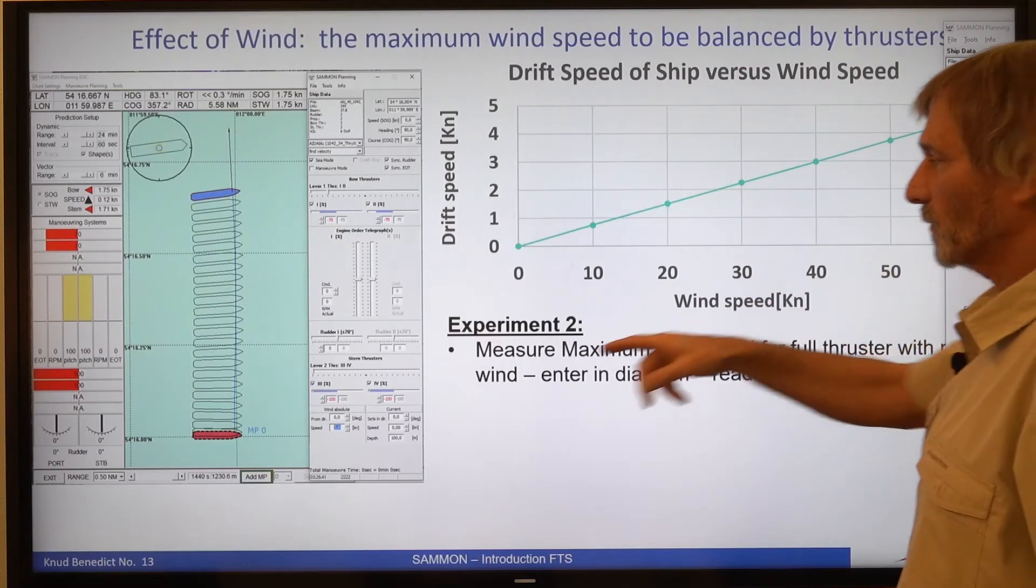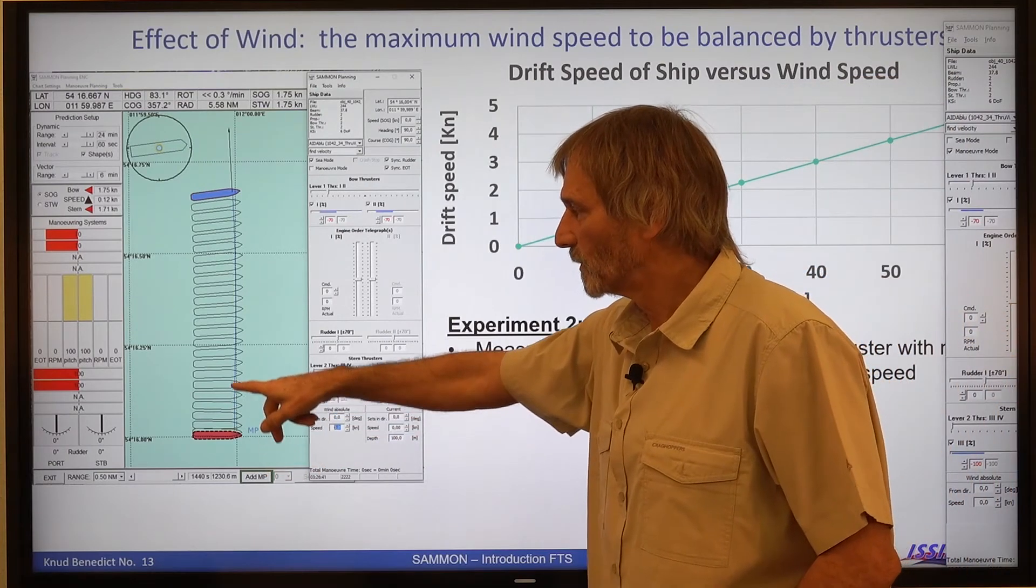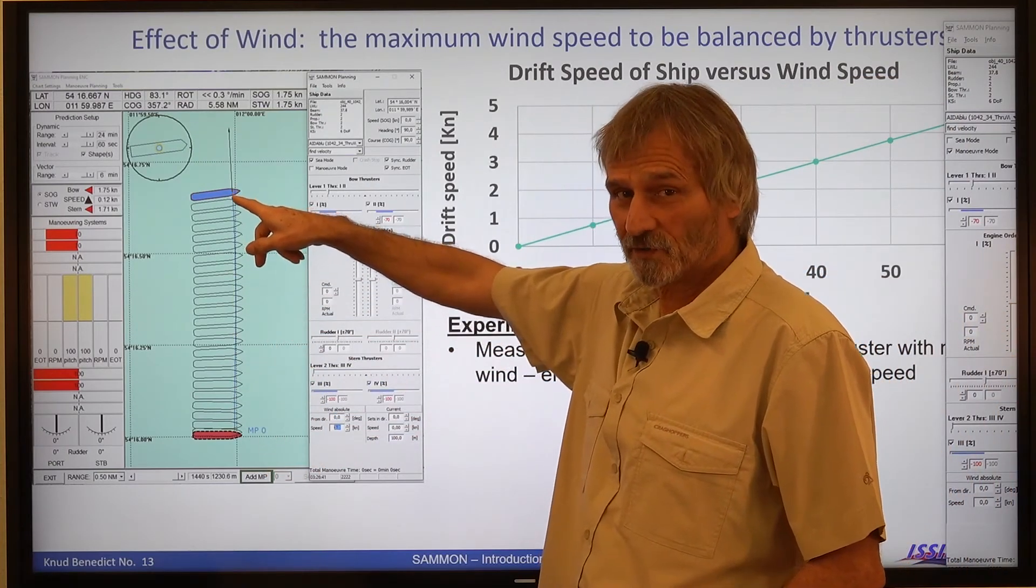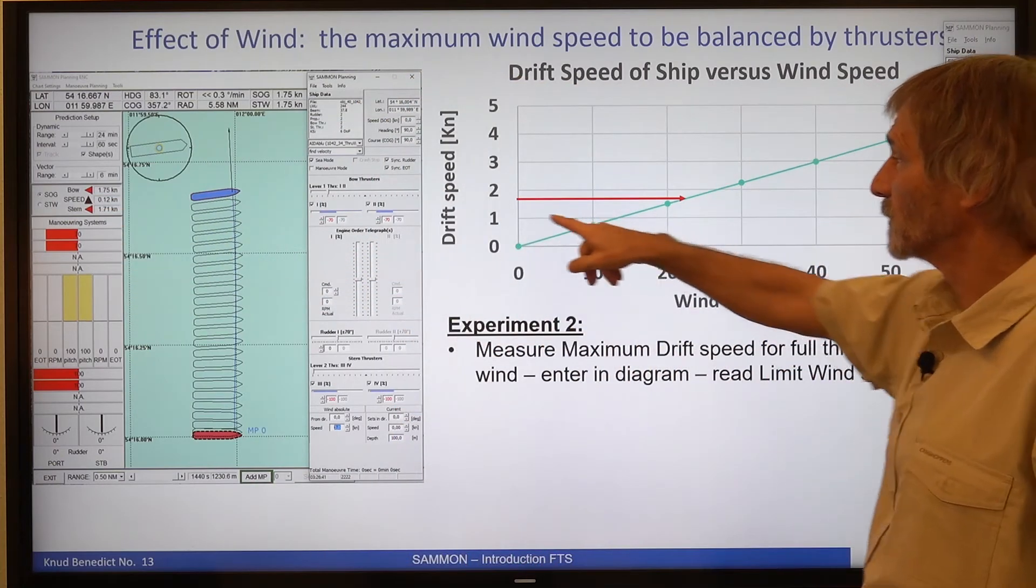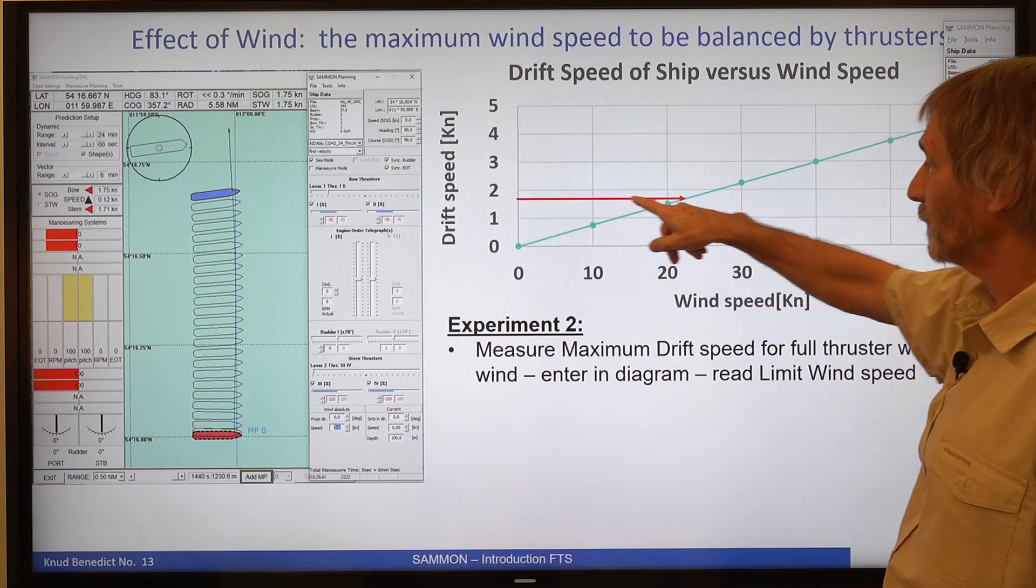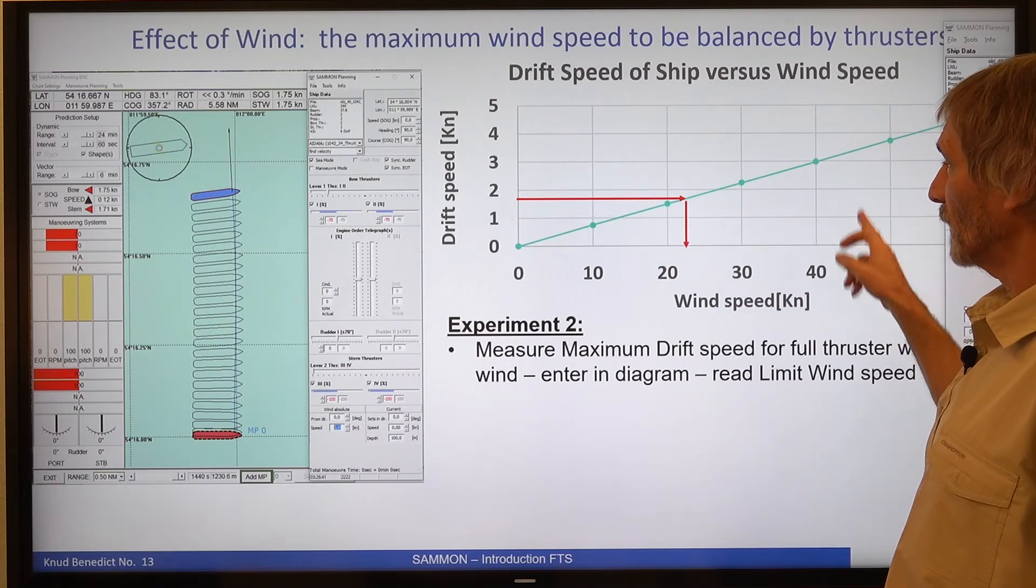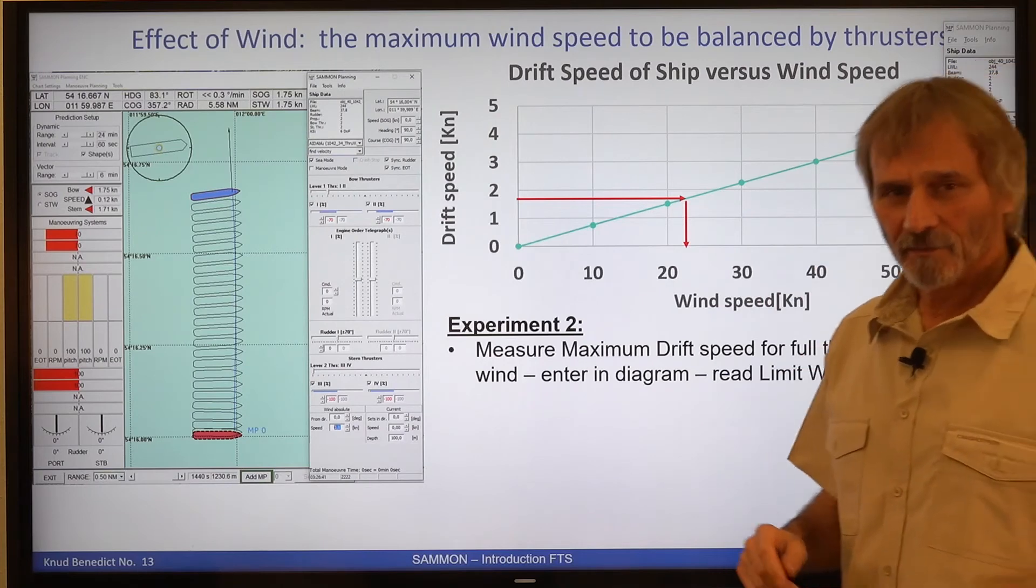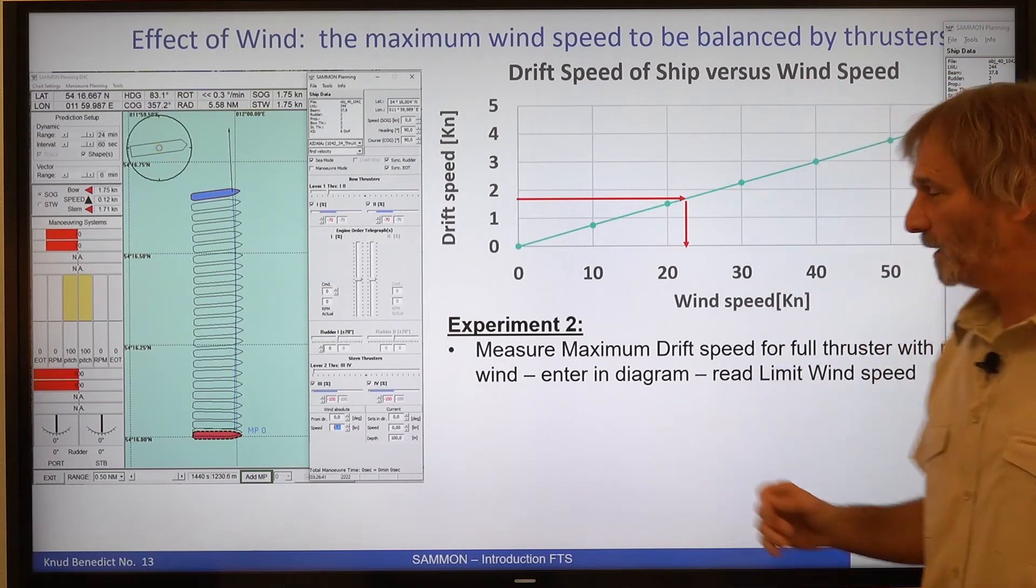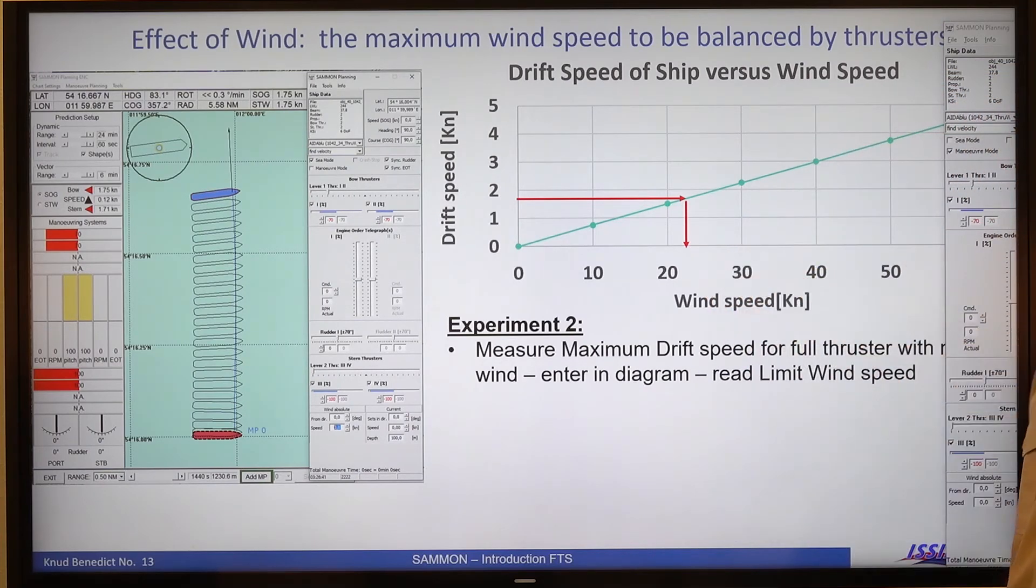So this is now our drifting speed with our thrusters. And we arrived here with 1.75. So this 1.75, we go in our data here. And we can read this would balance roughly a wind speed of 23 knots.